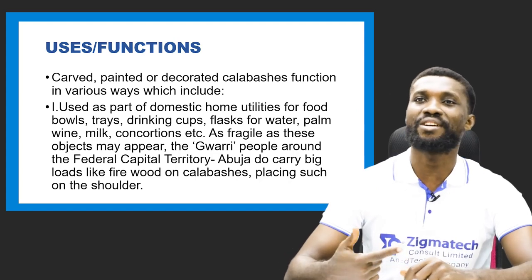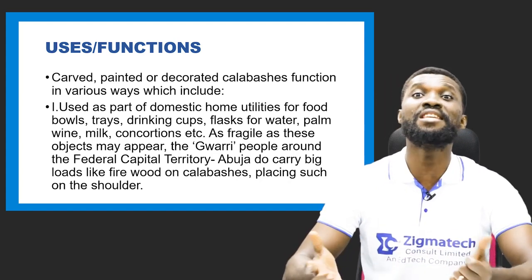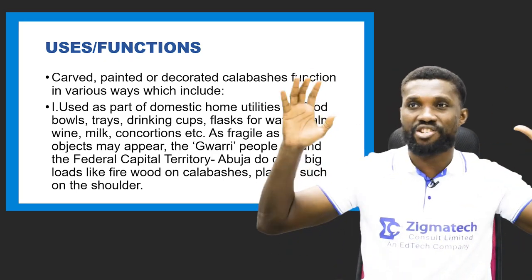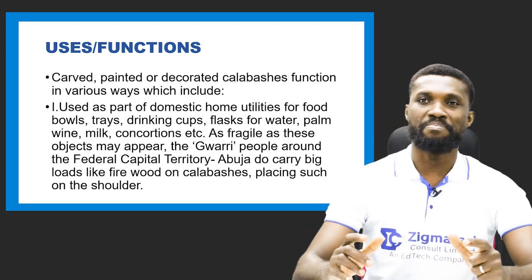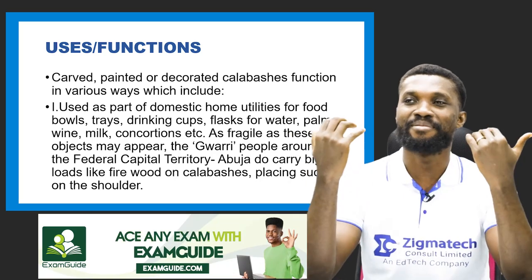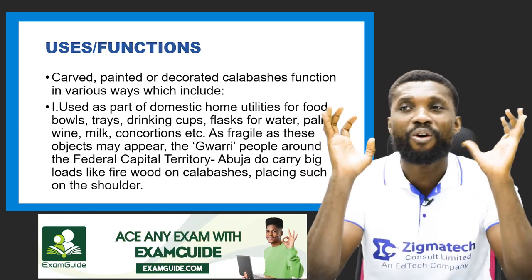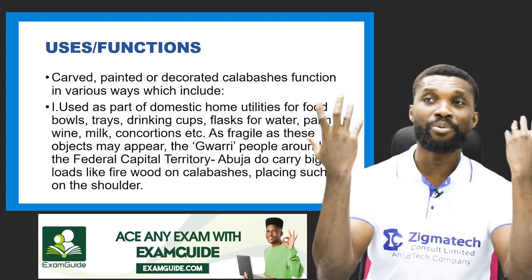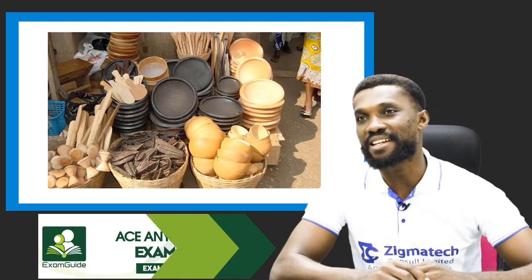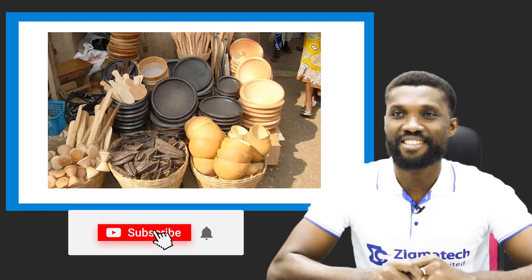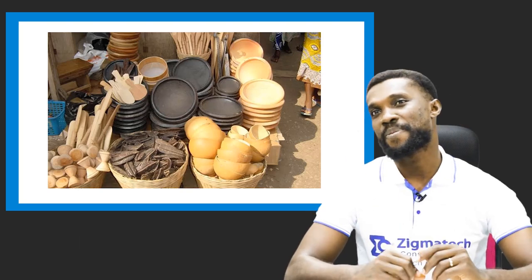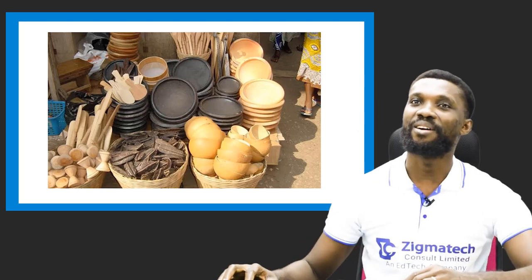People around the Federal Capital Territory in Abuja carry big loads like firewood on calabash, using them to transport food — even hawking with them, placing some on their shoulder when going to sell. Here is a marketer who produces and sells calabash, showing how she positions these things and makes money out of it.